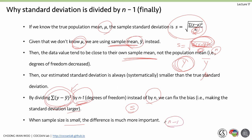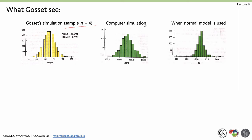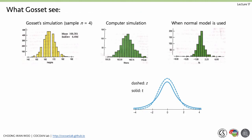From Gossett's simulation, each sample had n equals 4. In a computer simulation with sample size n equals 4, the normal model is narrower, but the observed distribution is wider. The dashed line is the z-distribution and the solid line is what Gossett actually observed. Because of this, the t-distribution was born — it has heavier tails than z when the sample size or degrees of freedom is small.